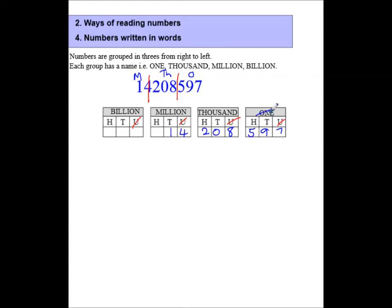You see, in this case, we never say the name one. If I have to write that out, everything has to be in words. So I've got 14,208,597.